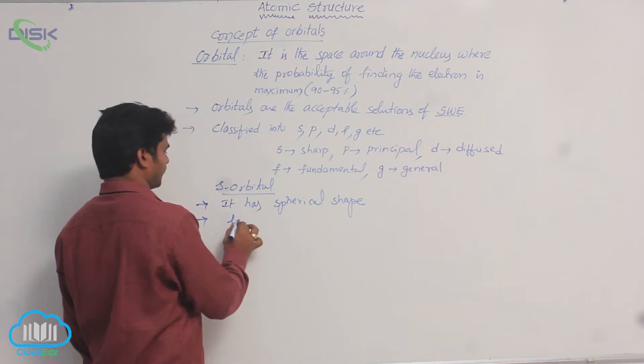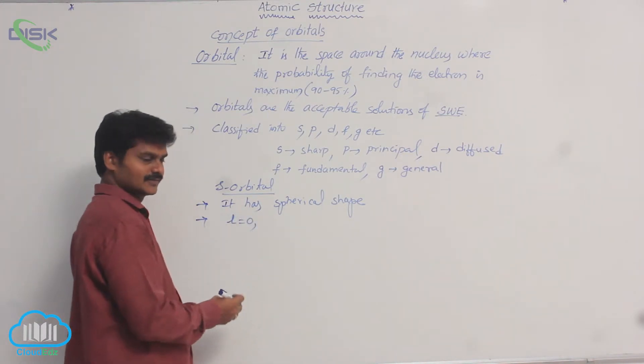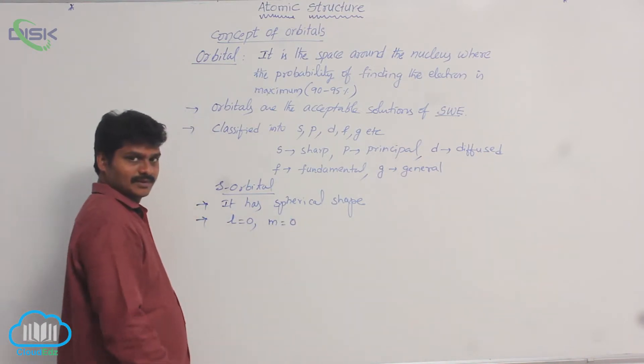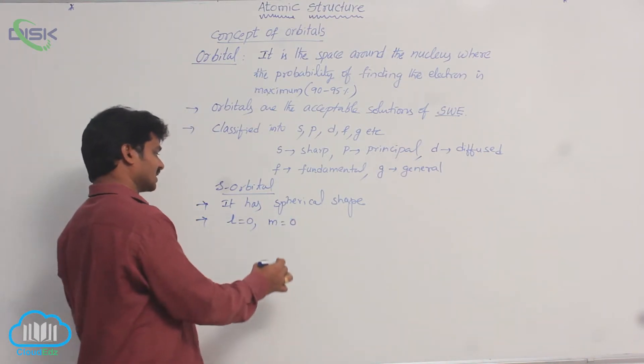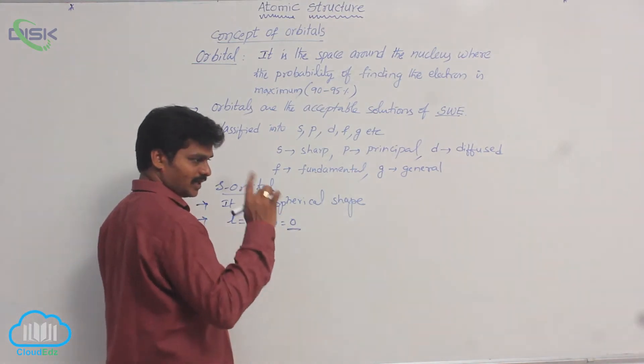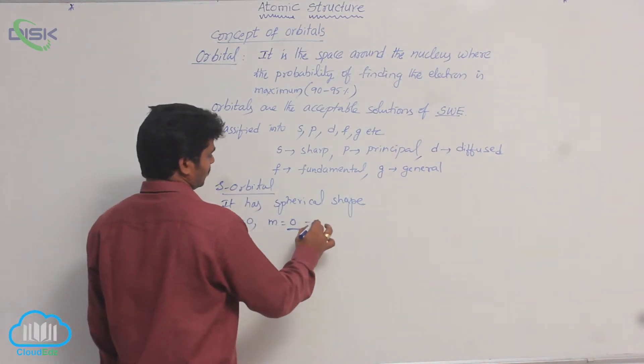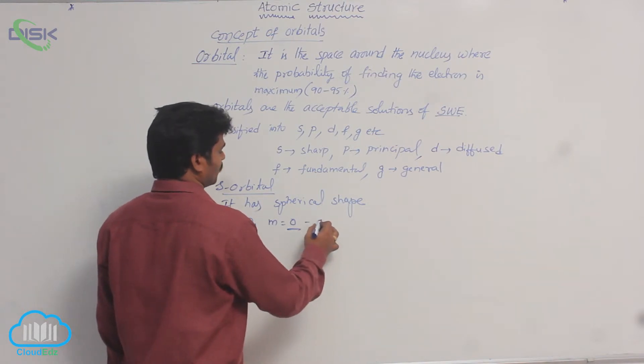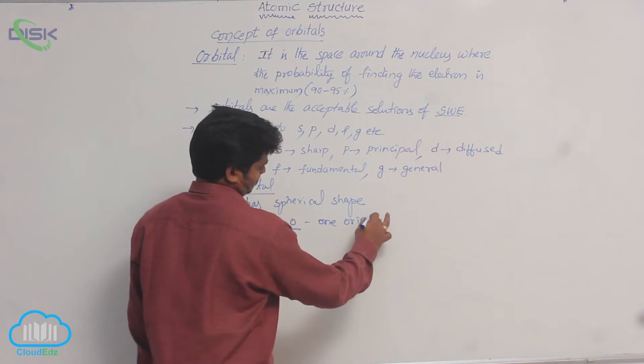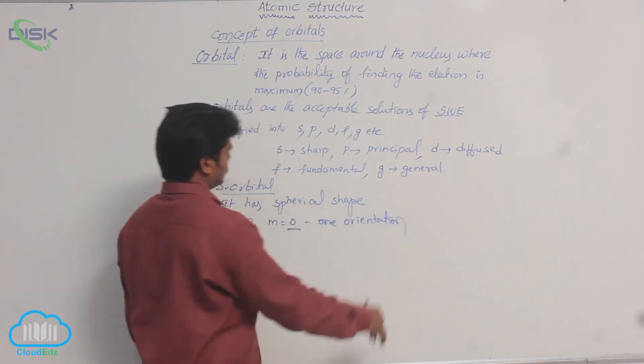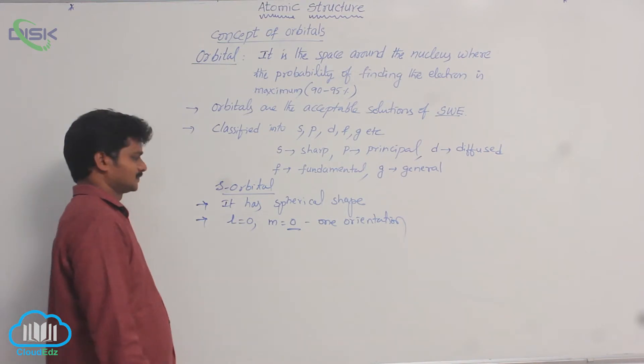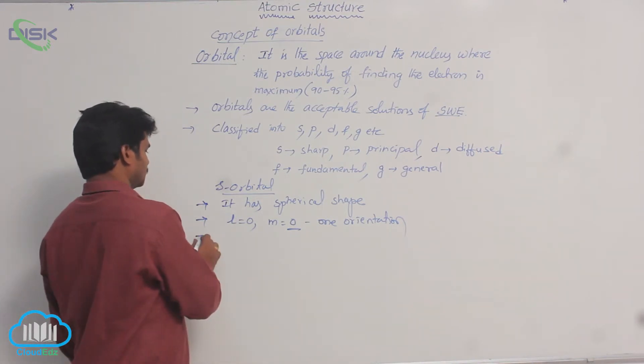Whose L value is 0, and its M value is also 0. So how many values are possible for M? Only one value. That's why for S subshell, only one orientation. For an S subshell, only one orientation is possible.